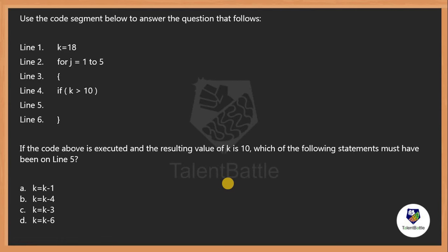First question: use the code segment below to answer the question that follows. The code initializes k to 18, then a for loop runs from j equals 1 to 5. Inside the loop there is an if condition checking if k is greater than 10, and line 5 is empty. If the resulting value of k is 10, which statement must have been on line number 5?